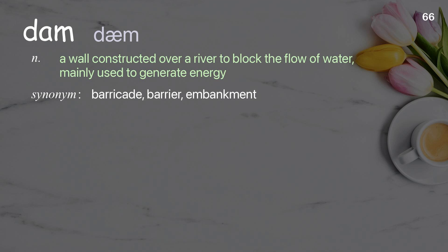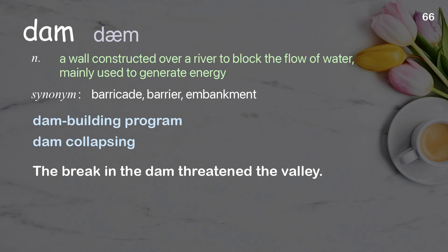Dam. A wall constructed over a river to block the flow of water, mainly used to generate energy. Examples: dam building program; dam collapsing. The break in the dam threatened the valley.